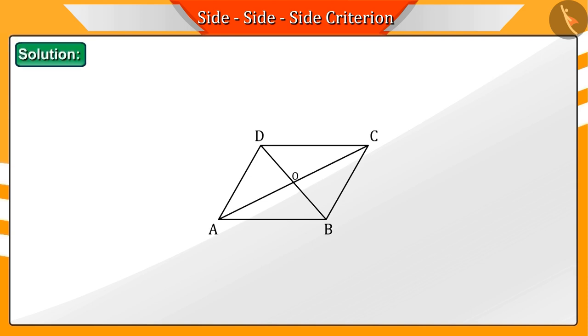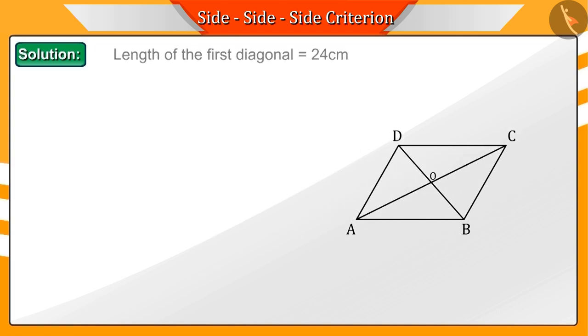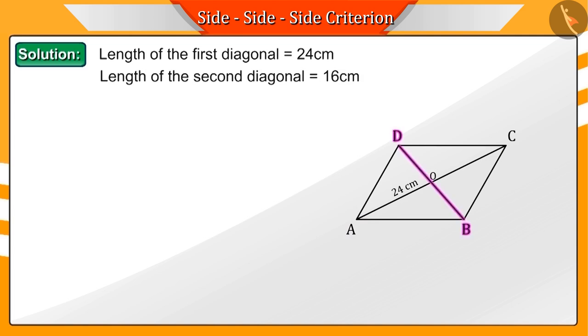We know that there are two diagonals in a rhombus. Let diagonal AC be 24 cm and diagonal BD be 16 cm long. The diagonals of a rhombus divide each other into equal parts perpendicularly.